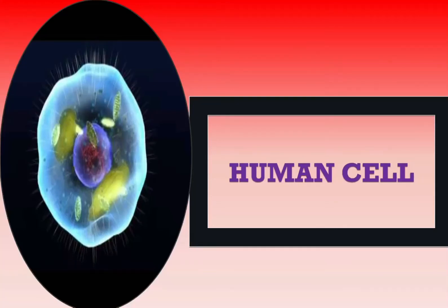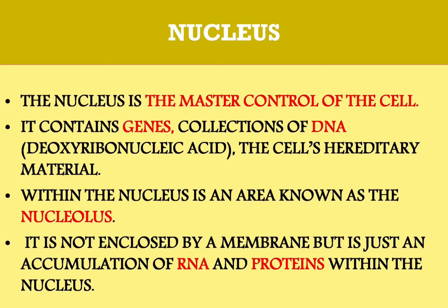Continuing with the human cell, in this video we'll be discussing the nucleus, microfilaments and microtubules, and ribosomes. Starting with the nucleus: the nucleus is the master control of the cell. It contains genes — collections of DNA — which determine every aspect of human anatomy and physiology.